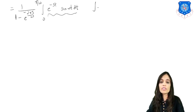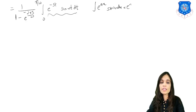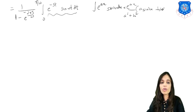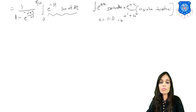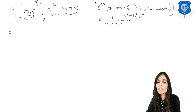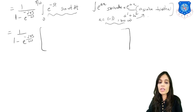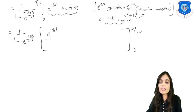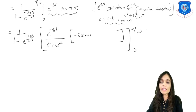To evaluate the integral, we use the formula: integral of e raised to ax times sin(bx) dx equals e raised to ax upon (a² + b²) times (a sin(bx) minus b cos(bx)). Here a equals minus s and b equals ω. Substituting, we get 1 upon (1 minus e raised to minus 2πs/ω) times the expression e raised to minus st upon (s² + ω²) times (minus s sin(ωt) minus ω cos(ωt)), with limits 0 to π/ω.